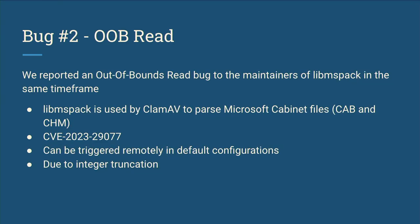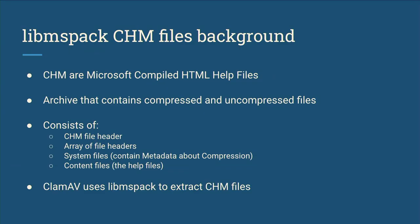We also reported an out-of-bounds read in roughly the same timeframe to the maintainers of libmspack, an open source library to parse Microsoft Cabinet files used by Microsoft. ClamAV uses this library to parse some of these archives. The out-of-bounds read is tracked as CVE-2023-29077, can be triggered in default configurations, and occurs due to an integer truncation.